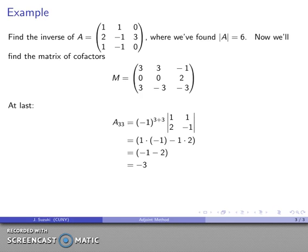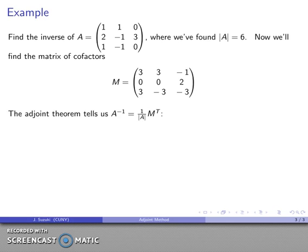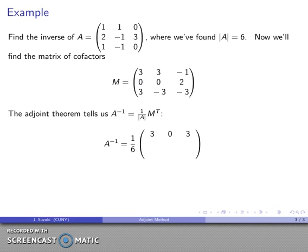The adjoint theorem tells us I can find the inverse by multiplying the transpose of the matrix of cofactors by 1 over the determinant. I know the determinant, so: A⁻¹ = (1/6) · Mᵀ. I rewrite rows as columns and columns as rows — my first column becomes my first row, my second column [3, 0, -3] becomes my second row, and my third column [-1, 2, -3] becomes my third row.